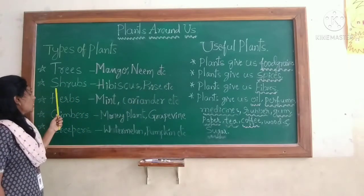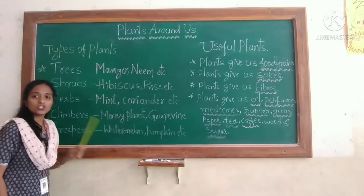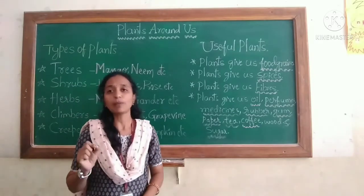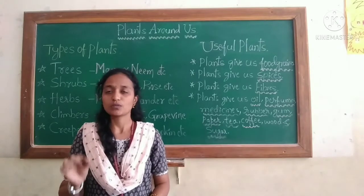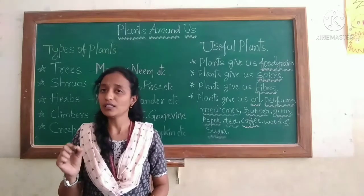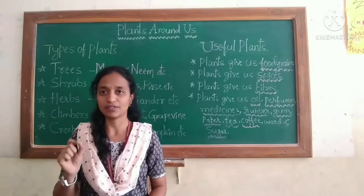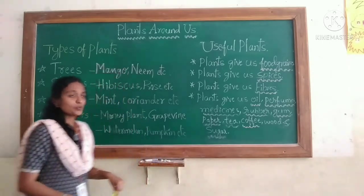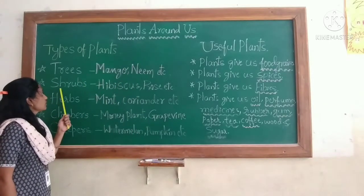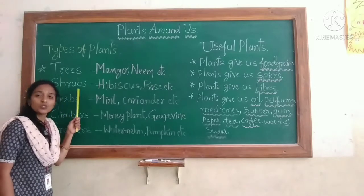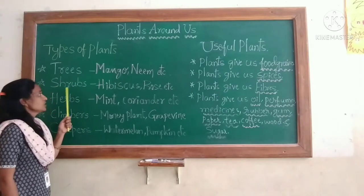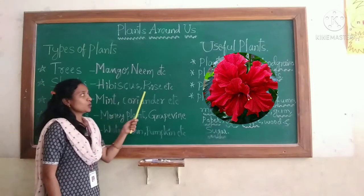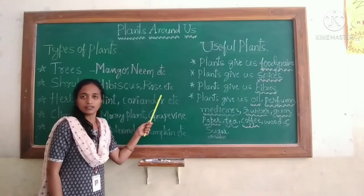Let us know about shrubs. What are shrubs? Small and bushy plants are called shrubs. Bushy means they grow thickly with a lot of leaves. Examples: hibiscus, rose, and cotton plant.